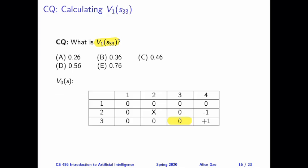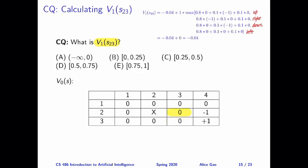Now pause the video, take some time to do these calculations yourself, and then keep watching for the answer. For the first question, the correct answer is option A, and the exact value is that V sub 1 of S2,3 should be minus 0.04. The calculations are included here, and also on a later slide in bigger font — so if you have trouble seeing this, you can look at the annotated slides.